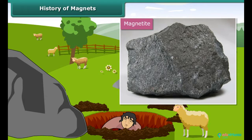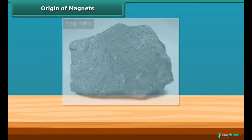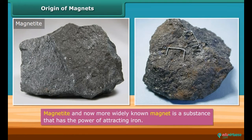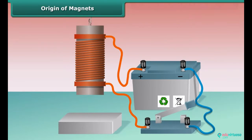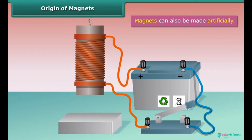This type of rock was subsequently named magnetite, which was named after Magnus himself. Magnetite is a natural magnet and contains iron. In later days, this was more widely known as a magnet. A magnet is a substance that has the power of attracting iron. Magnets can also be made artificially; however, the process of making artificial magnets is a recent discovery.